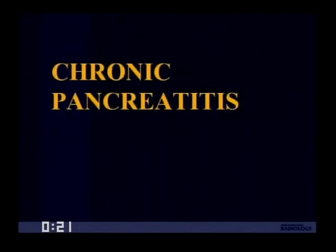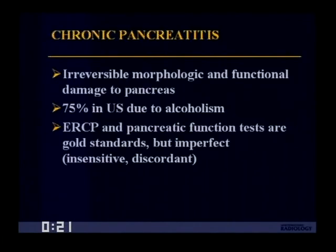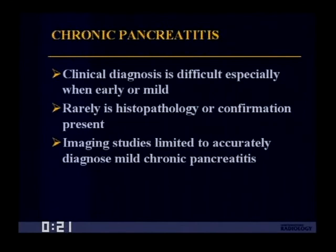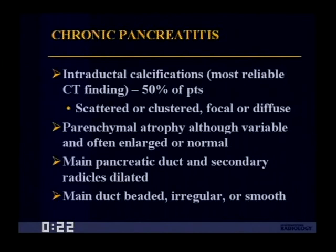I'll now discuss chronic pancreatitis. Chronic pancreatitis is due to irreversible morphologic and functional damage to the pancreas; about three-quarters of cases in the United States are due to alcoholism. ERCP and clinical examinations, although gold standards, are imperfect. Clinical diagnosis is especially difficult when early or mild. Imaging studies are also limited in detecting mild forms. On CT, we look for intraductal calcifications — the most reliable CT finding, seen in about half of patients — parenchymal atrophy, and dilated pancreatic duct with secondary radicals, including beading or irregularity of the duct.